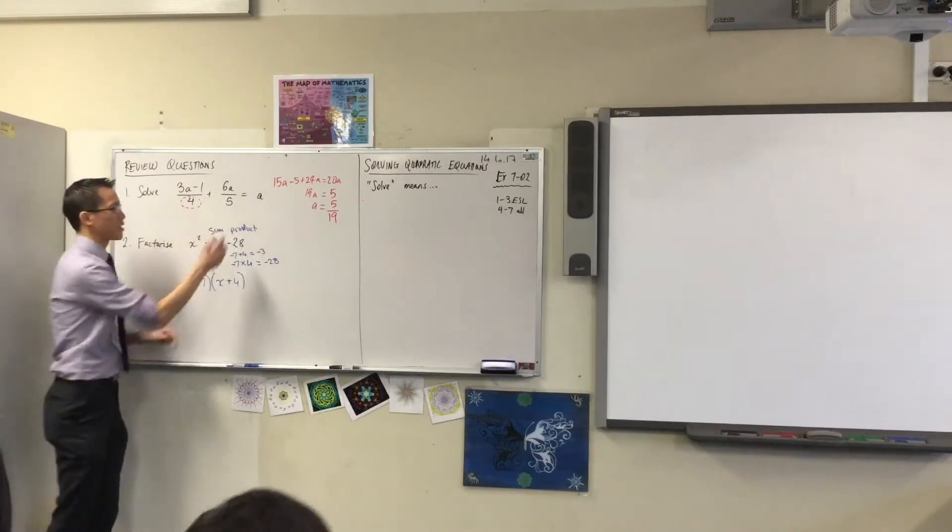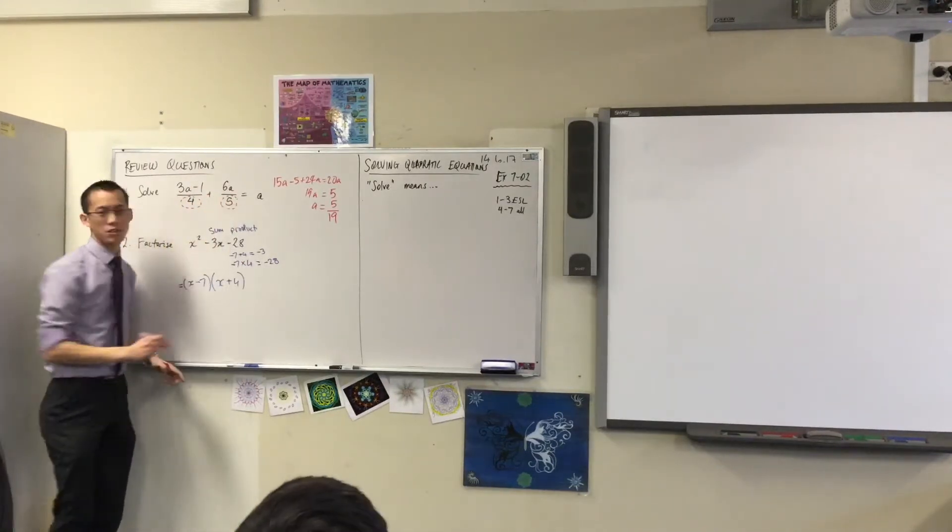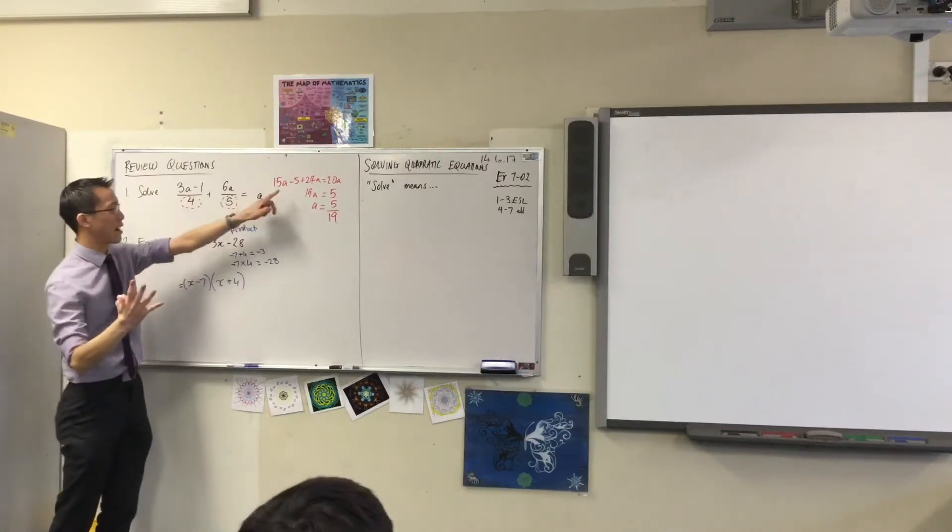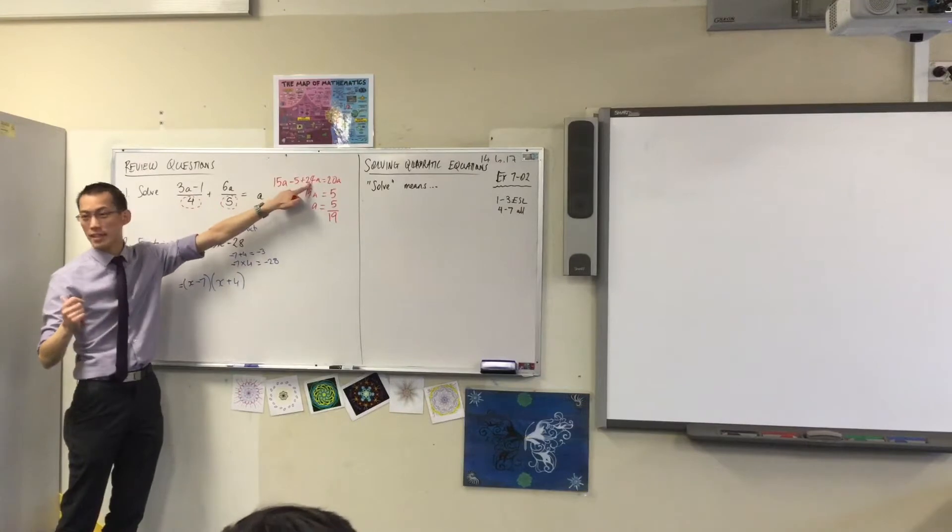And the same thing happens here. The 20 and this 5 will interact, leaving you with? Four. Four. Because the 5 cancels. So 4 times 6 is 24.